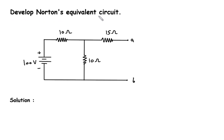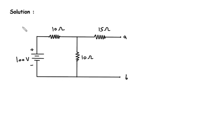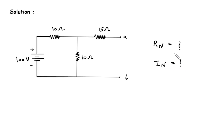We have to develop Norton's equivalent circuit for this circuit. For Norton's equivalent circuit, we have to find Rn, that is Norton's resistance, and In, that is Norton's current.